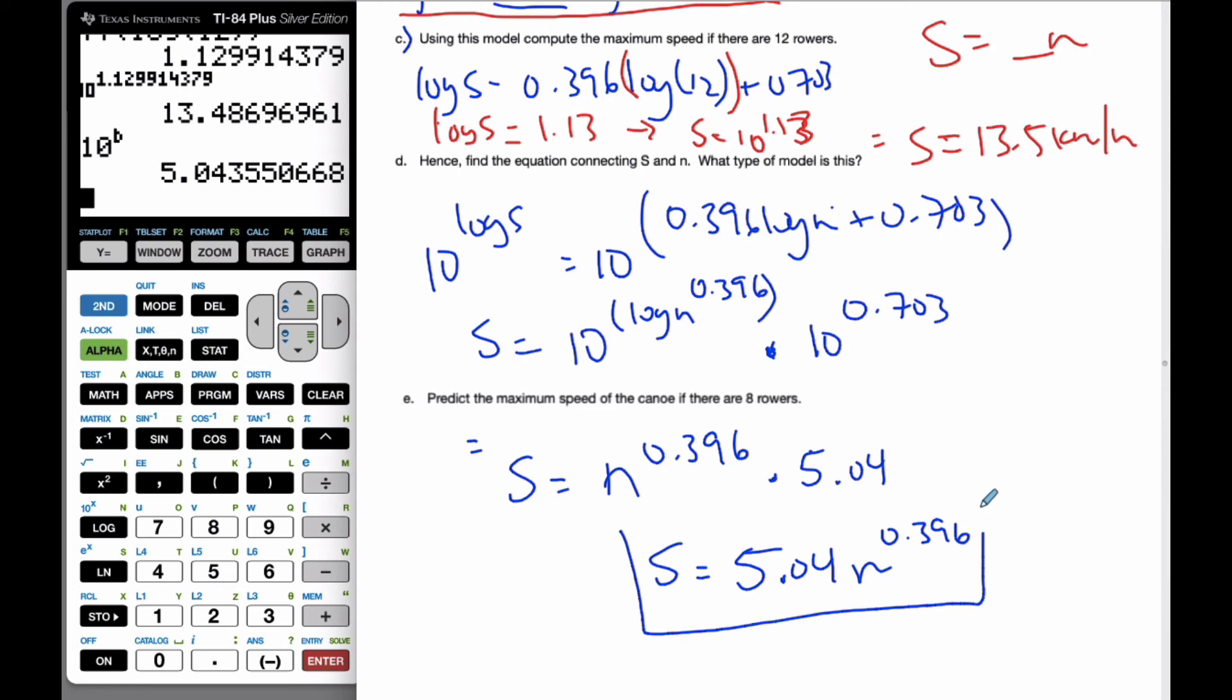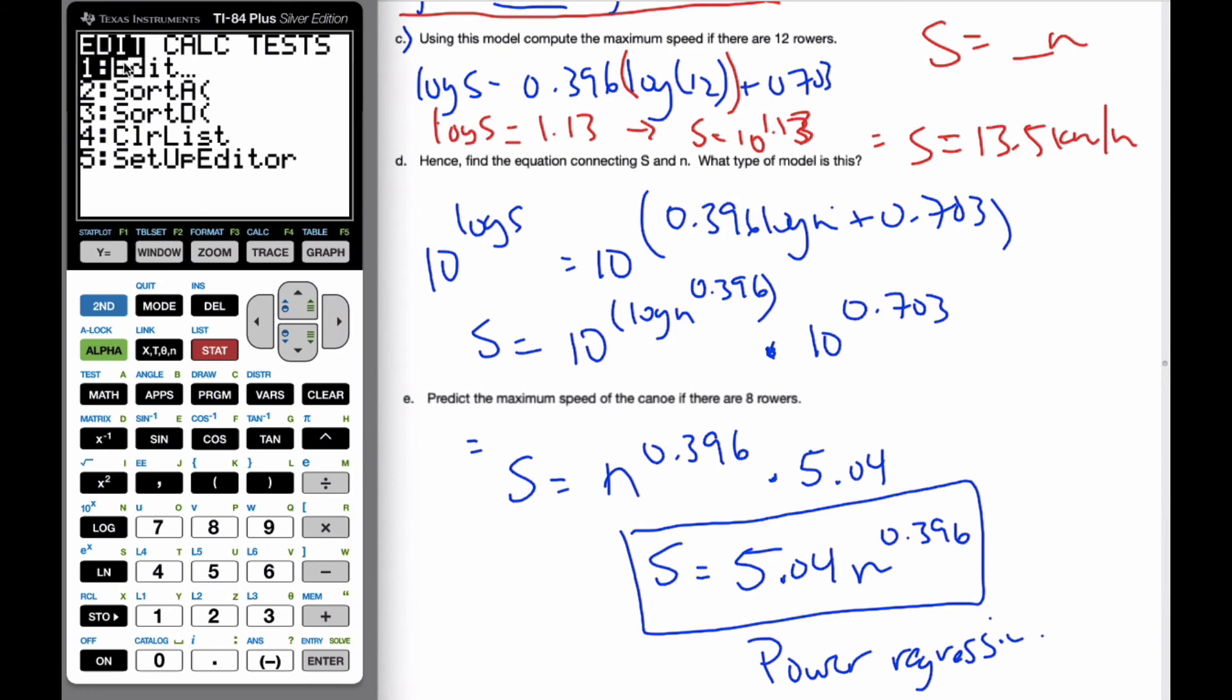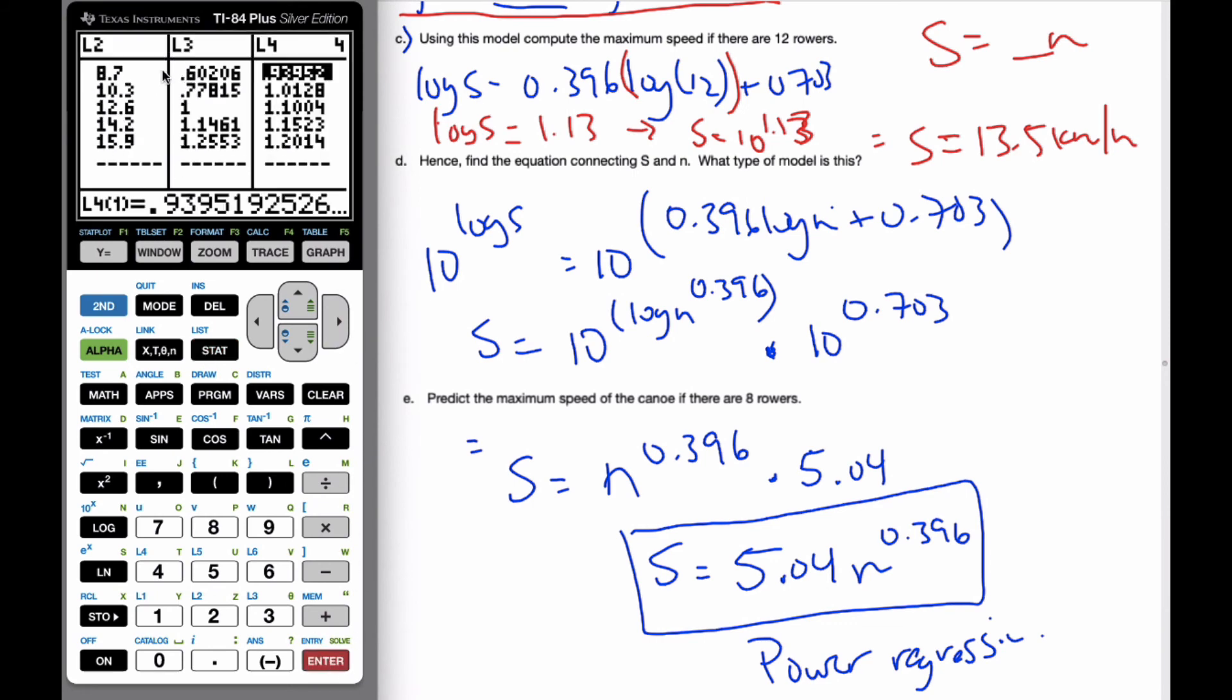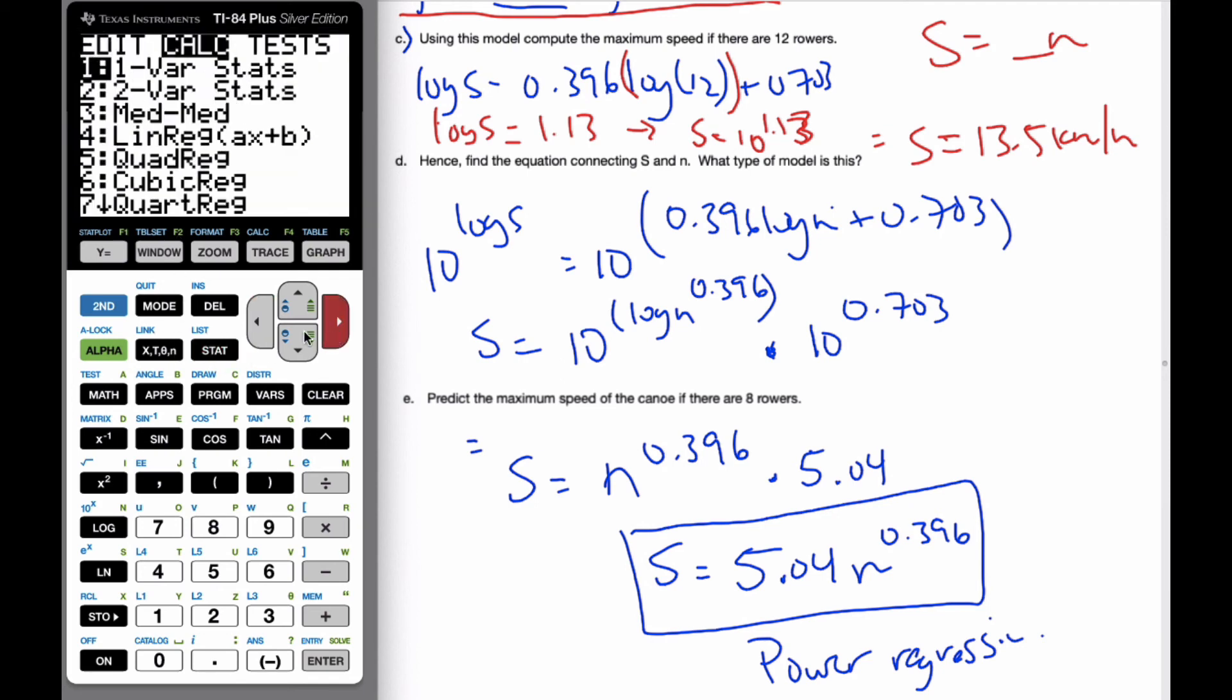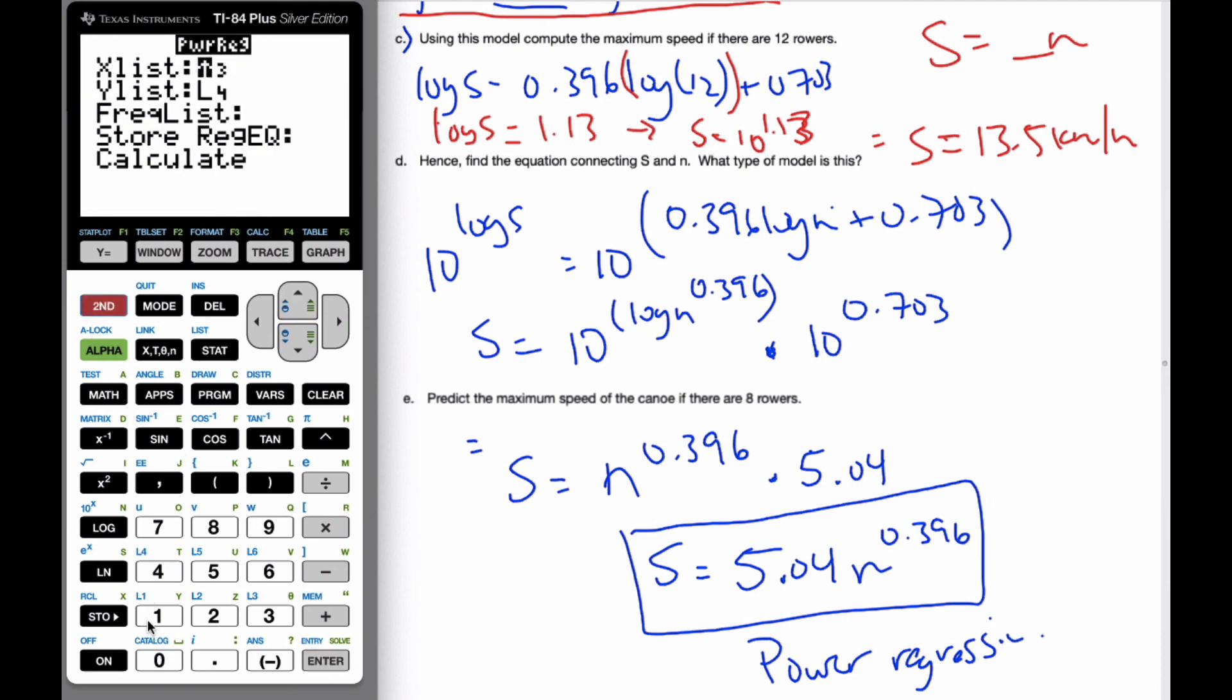And what I recognize here is that this is a power regression model. Okay. And so, what I could have done, I could have gone from my menu of L1 and L2. I could have done a power regression on these two. And if I do it, I should end up with the same. I'm going to do L1 and L2. Keeping my fingers crossed, I should end up with the same. And I do. I get 5.04 to the power of 0.396.